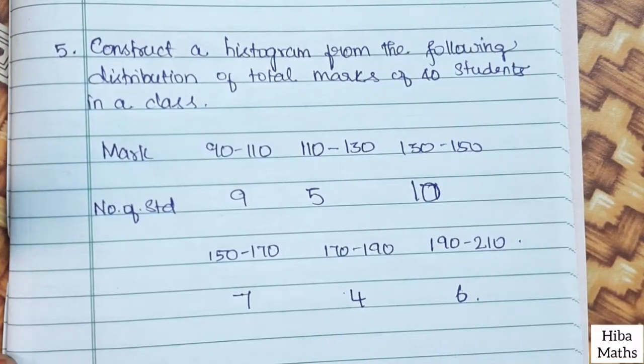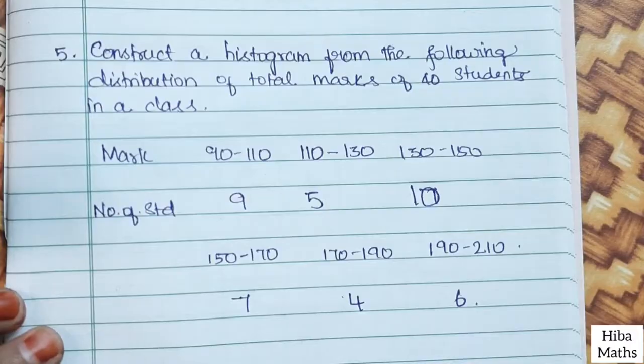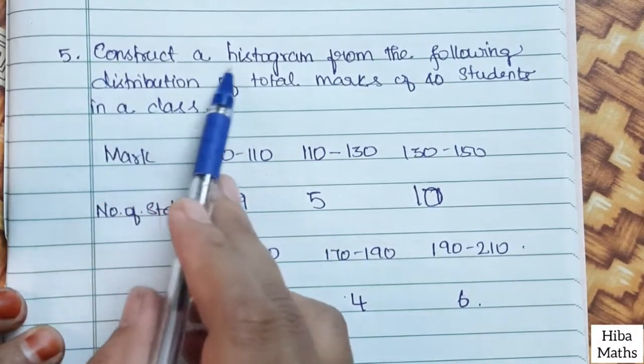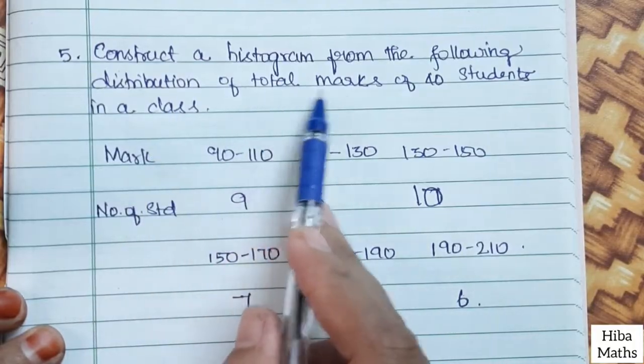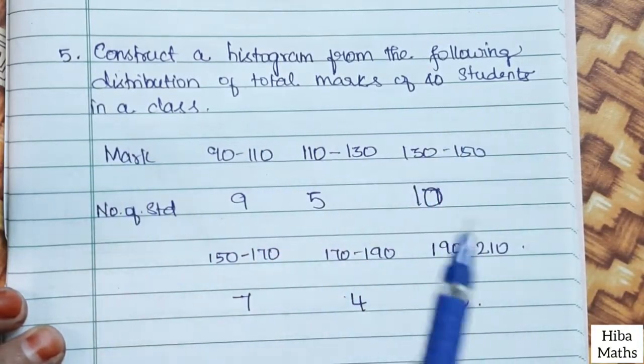Hello students, welcome to Hibamax. Max XA 6.2, fifth question: Construct a histogram from the following distribution of total marks of 40 students in a class.